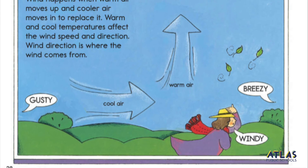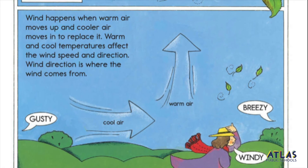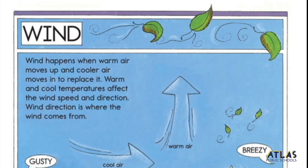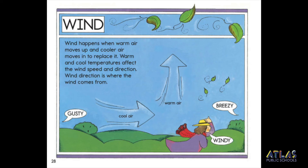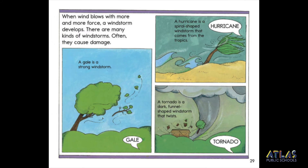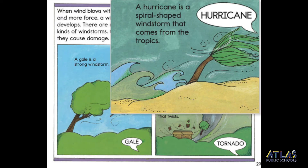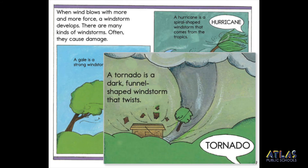Wind happens when warm air moves up and cooler air moves in to replace it. Warm and cool temperatures affect the wind speed and direction. Wind direction is where the wind comes from. When wind blows with more and more force, a windstorm develops. There are many kinds of windstorms, and often they cause damage. A gale is a strong windstorm. A hurricane is a spiral-shaped windstorm that comes from the tropics. A tornado is a dark, funnel-shaped windstorm that twists.